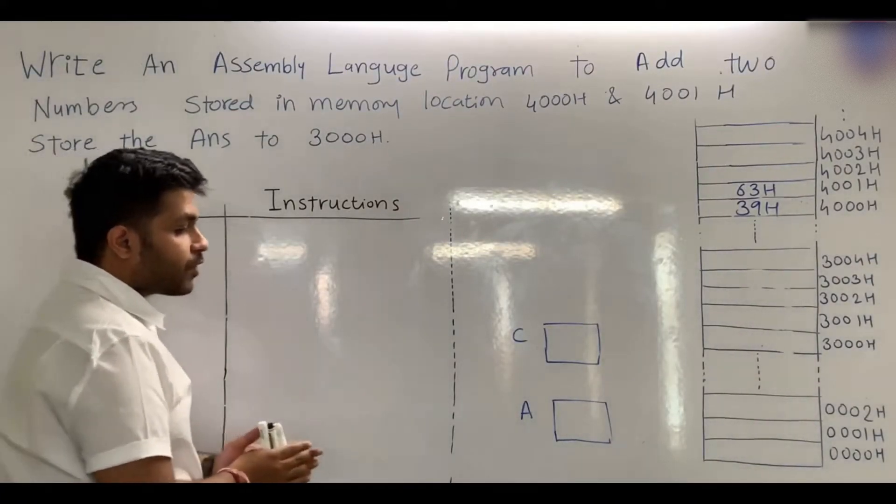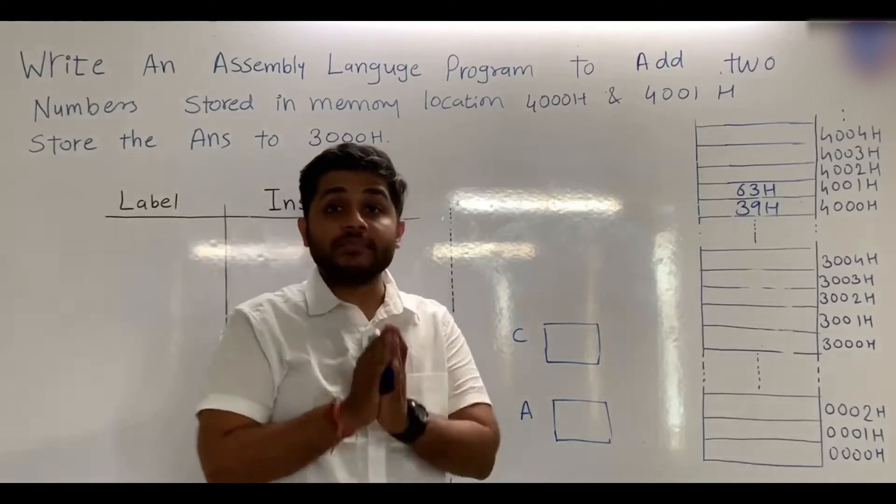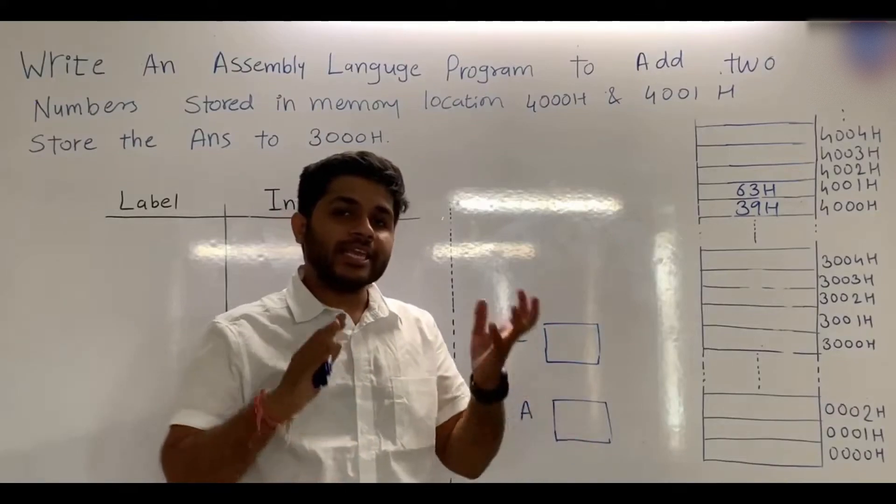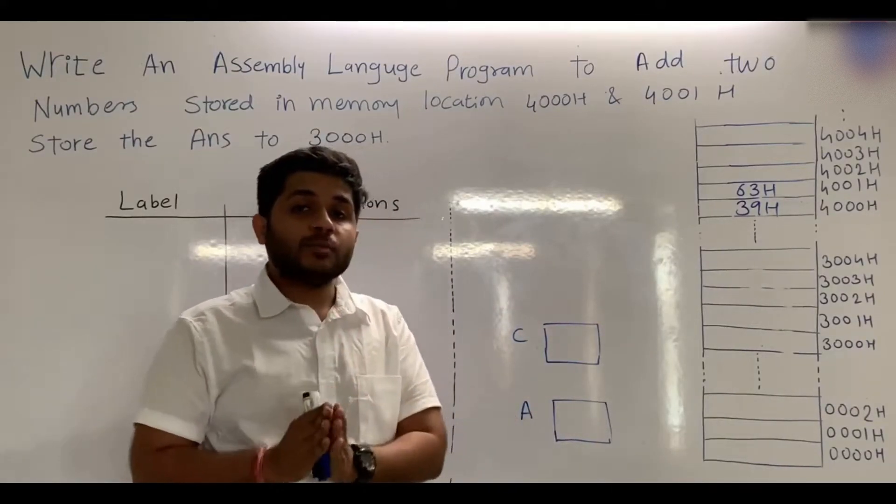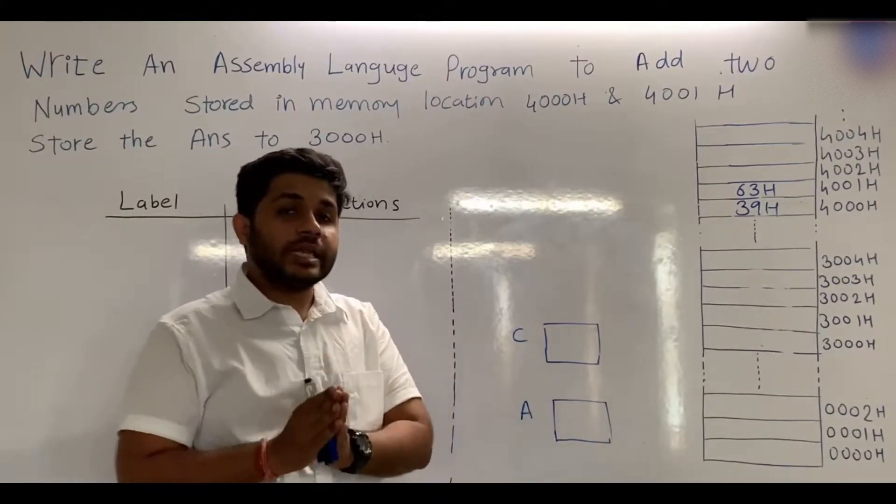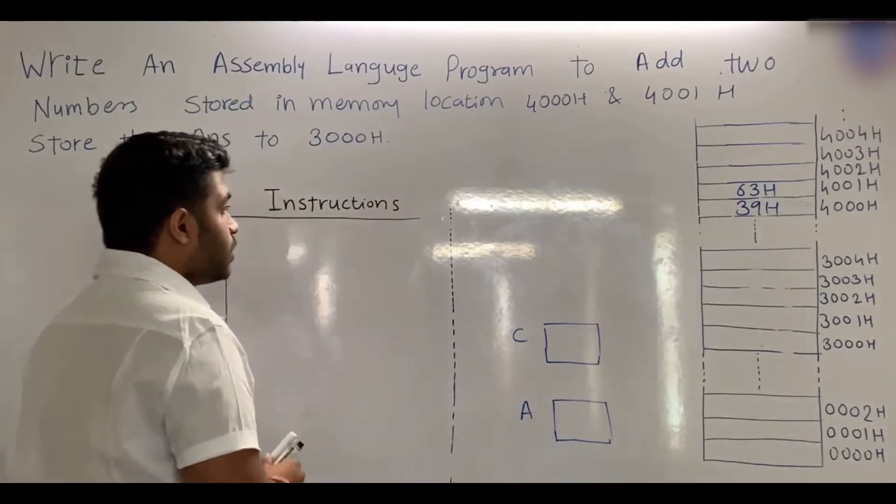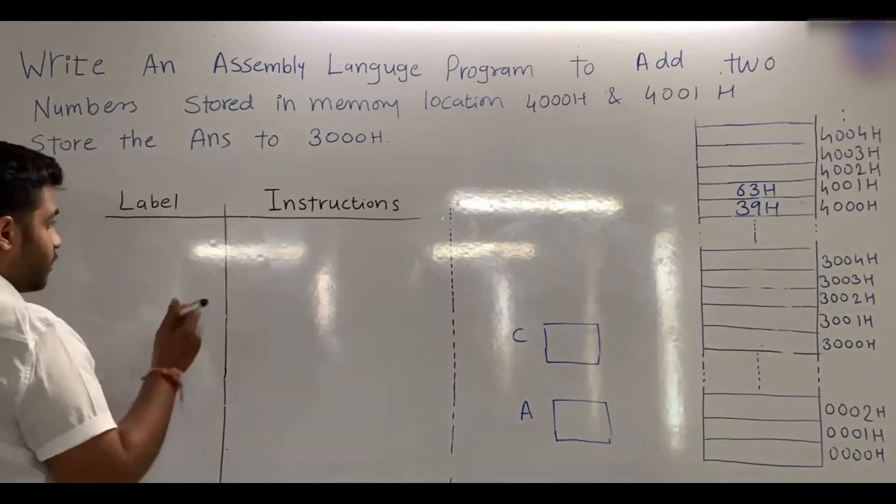Now, the microprocessor cannot perform any operation in memory directly. To perform addition, subtraction, or any operation on the data, the microprocessor first transfers the data into its internal registers. Let's write the first instruction.